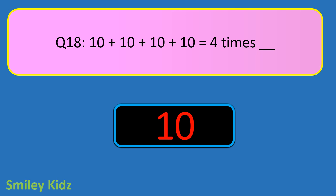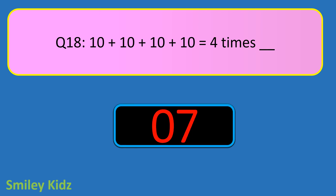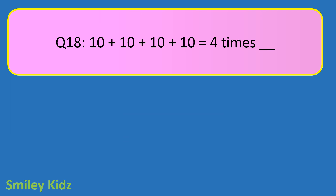Question number 18. 10 plus 10 plus 10 plus 10 plus 10 is equal to 4 times blank. Your time starts now. And your time is up. The right answer is 10. 10 plus 10 plus 10 plus 10 is equal to 4 times 10.